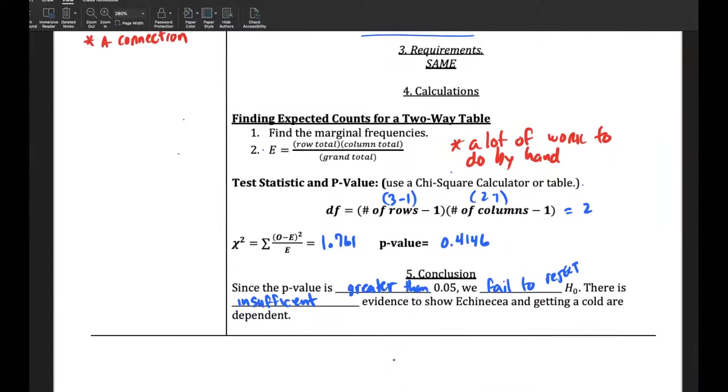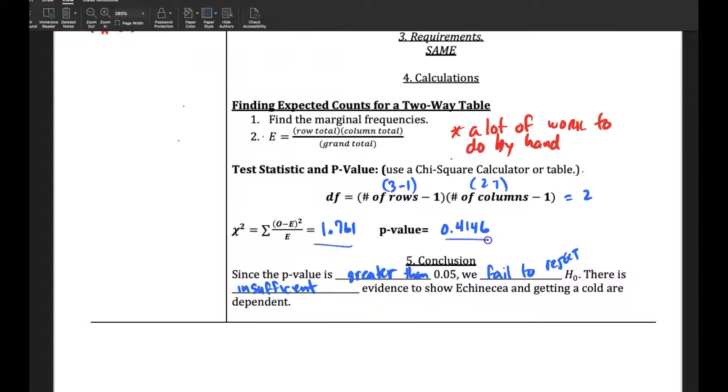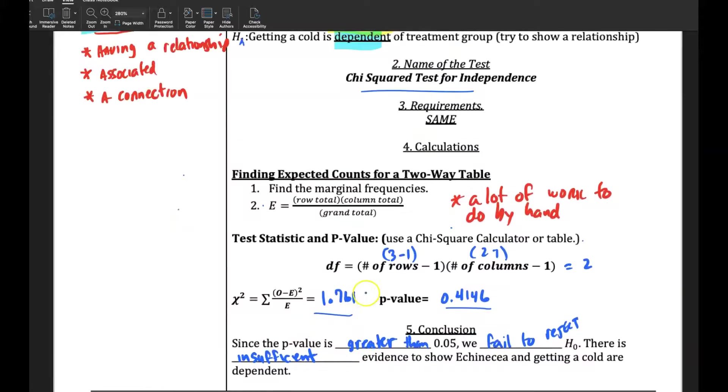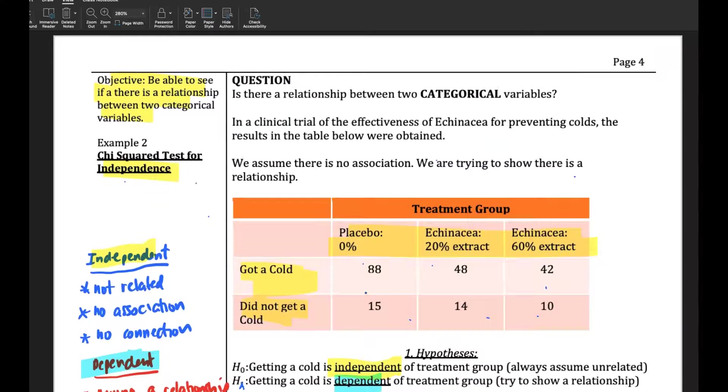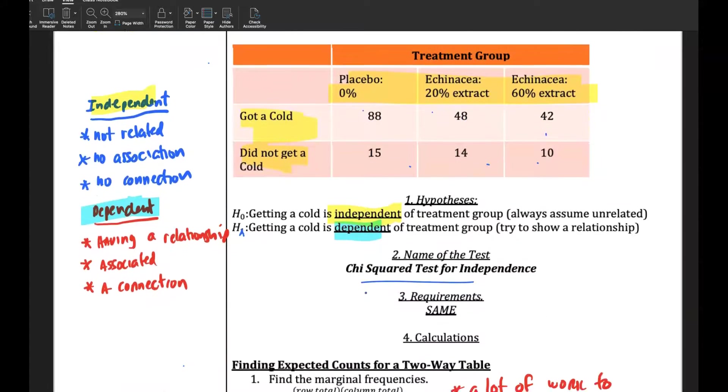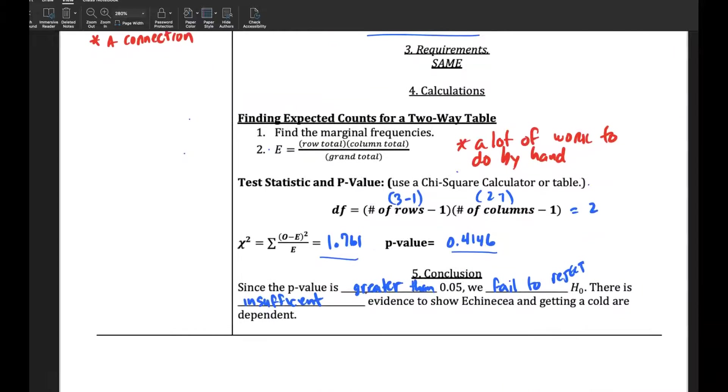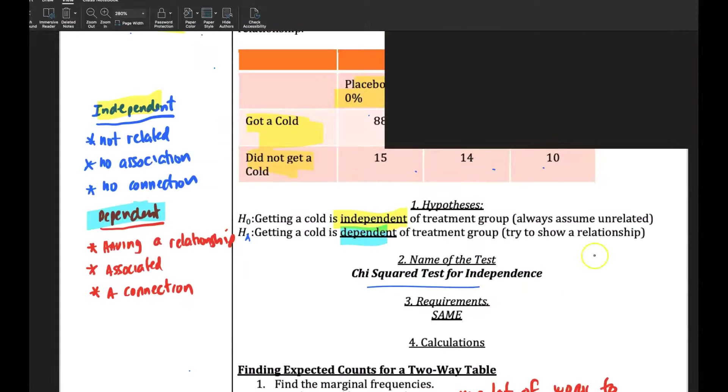And so from there, this is where you get those values, and then we have those same decisions. Since the p-value is greater than our alpha, which was 0.05, if it wasn't stated, remember, that's what we assume. We fail to reject this, so we say that's true, and we don't think that's true.